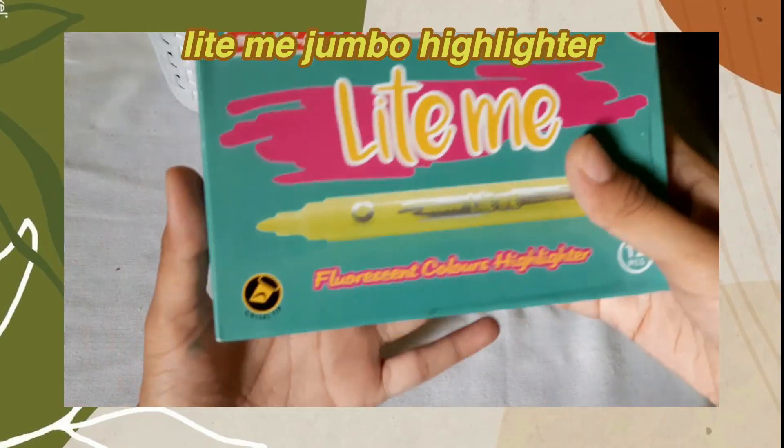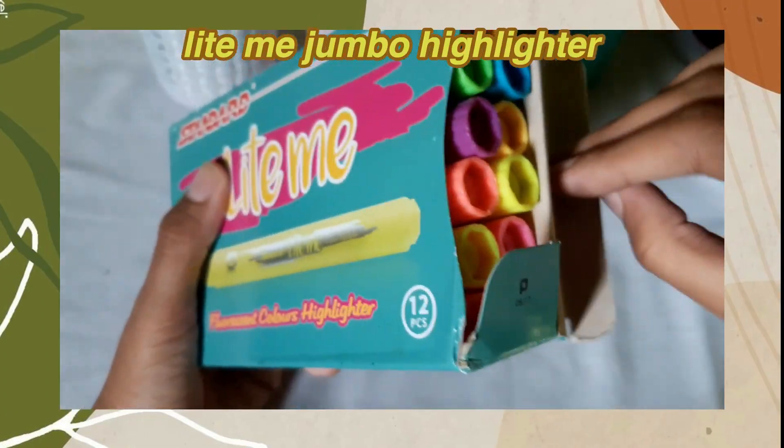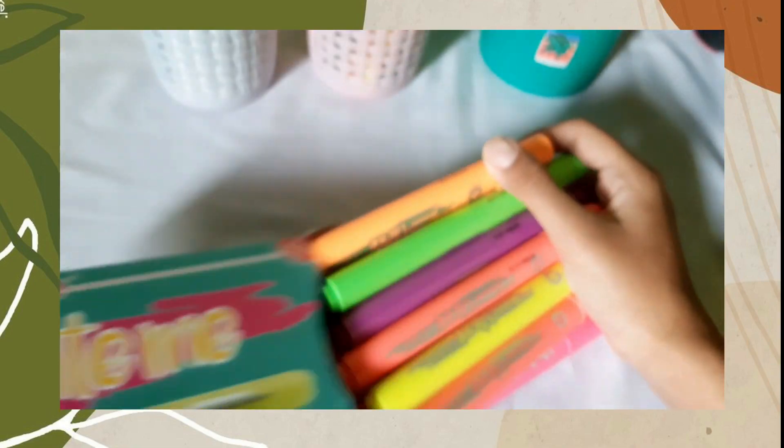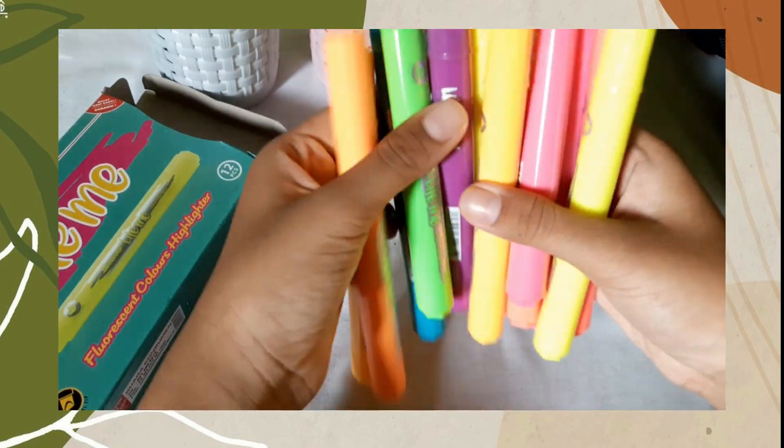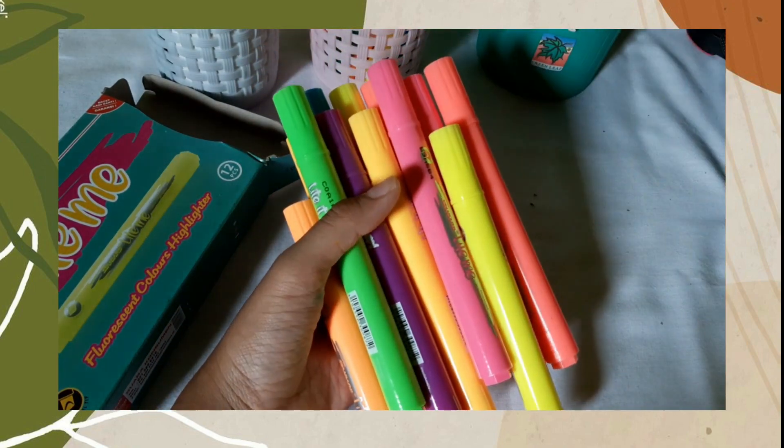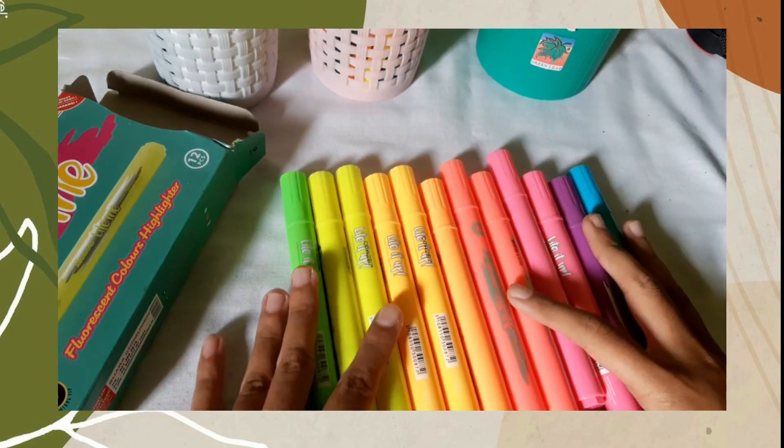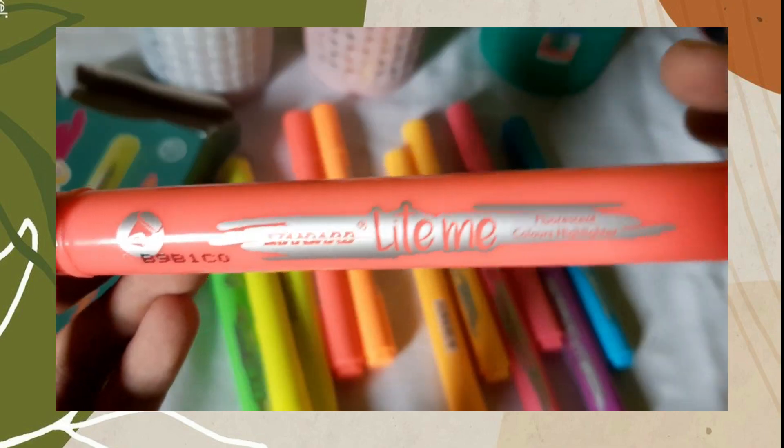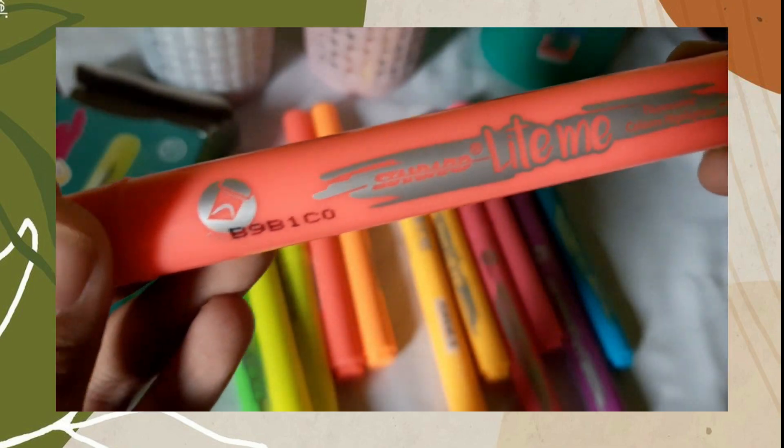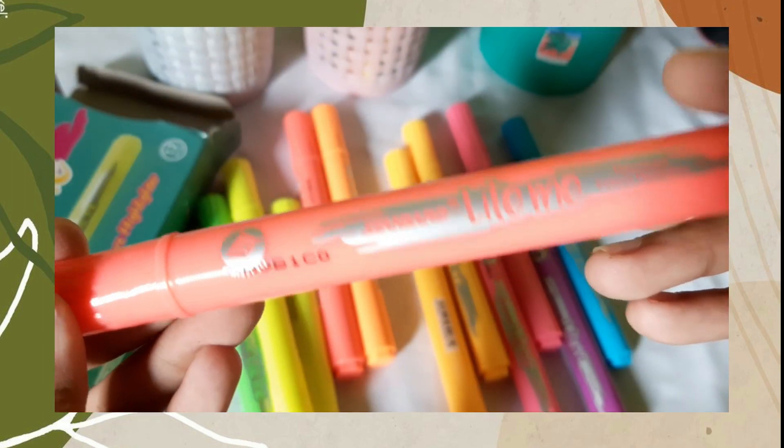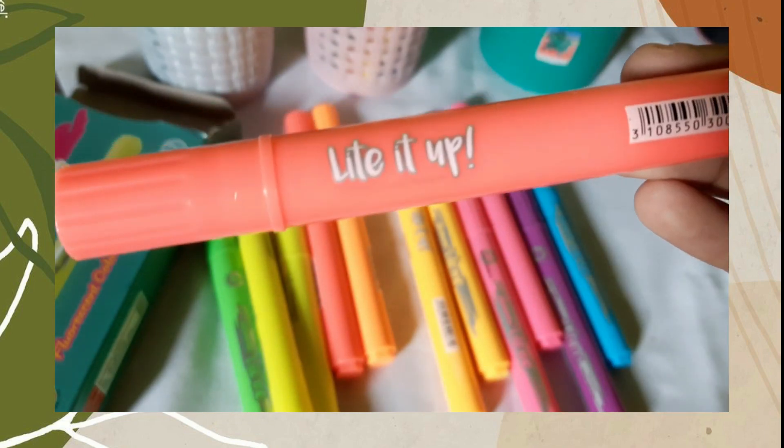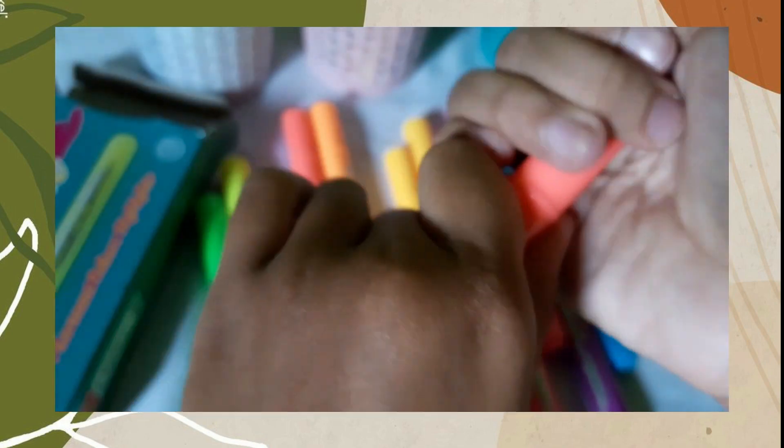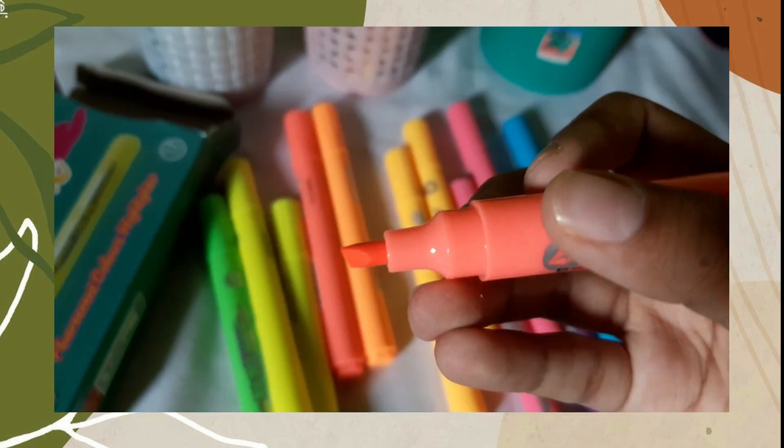Dan yang terakhir ada Lite Me Jumbo Highlighter. Lite Me Jumbo ini adalah versi gedenya Lite Me Dual Tip Highlighter. Bisa kalian lihat sendiri, warnanya juga sama, persis banget kayak Lite Me Dual Tip Highlighter, tapi dia cuma beda di desainnya doang. Dan dia cuma punya chisel tip yang tipnya tuh kayak highlighter pada umumnya. FYI, aku sering banget pake Lite Me Jumbo Highlighter ini buat bikin header yang biasanya aku post di Instagram @studies.